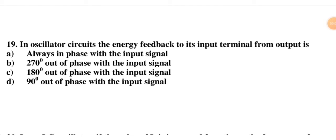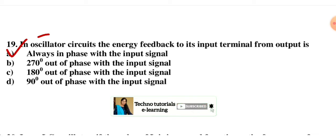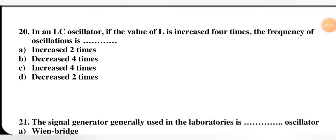In an oscillator circuit, the energy fed back to the input terminal from the output is — always in phase with the input signal, 270 degrees out of phase, 180 degrees out of phase, or 90 degrees out of phase? In an oscillator circuit, there is zero degree phase difference between the feedback energy and the input terminal — so the feedback is always in phase with the input signal. Option A is the right option.